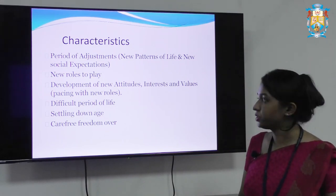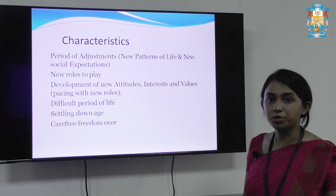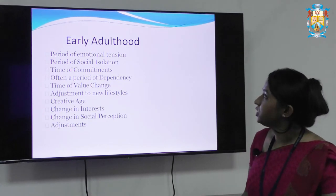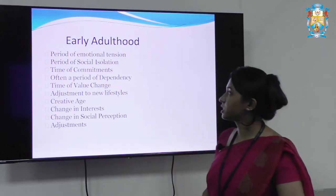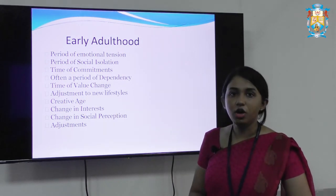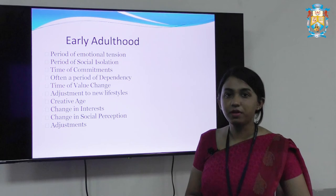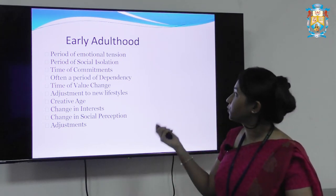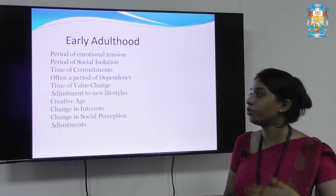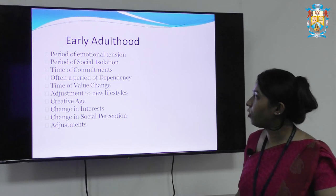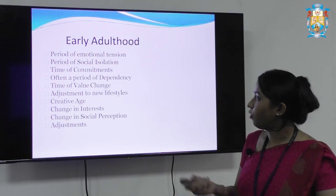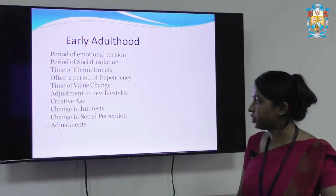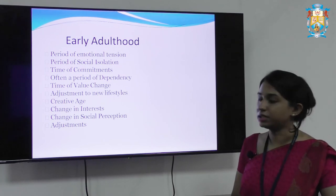Adults gain a vigour wherein they can direct things to happen. It is a difficult period of life because they have to look after their own expenses — a settling down age with a carefree, freedom attitude. Early adulthood characteristics include: a period of emotional tension with a lot going on in their life — they have to settle, earn their own money, get married, and settle down. It is a period of social isolation as friends become fewer. Time of commitments, often a period of dependency, time of value change, adjustment to new lifestyles, creative age, change in interest, change in social perceptions and adjustments.